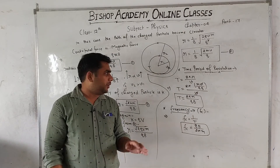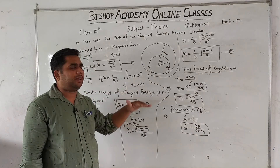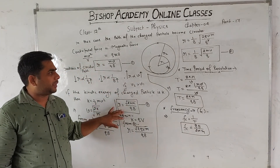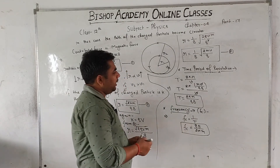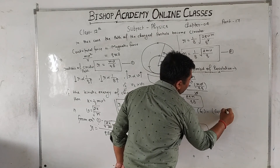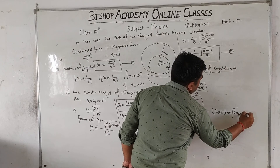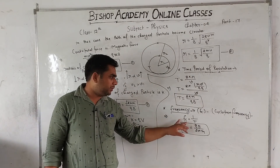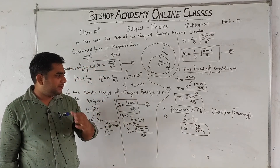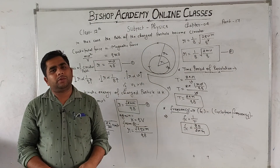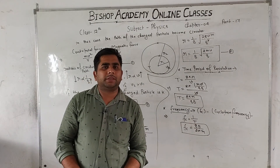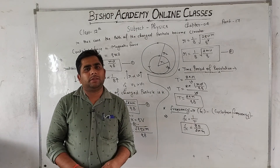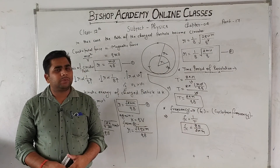Yeh ho jayega aapka value of fc. Jaise hi koi particle kisi uniform magnetic field ke perpendicular enter karta hai, toh uska jo path hota hai woh circular ho jata hai. Uske radius ke liye aapne teen expressions dekhe, time period bhi dekha, frequency of oscillation bhi dekha — isse cyclotron frequency bhi kehte hain. In the upcoming lecture, we will study Case 3: when a charged particle enters the magnetic field at some angle. Thank you.